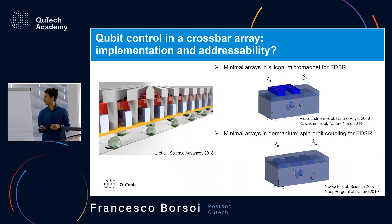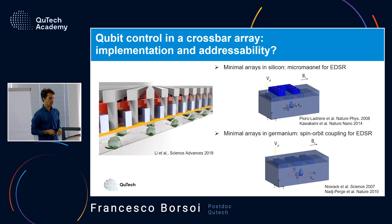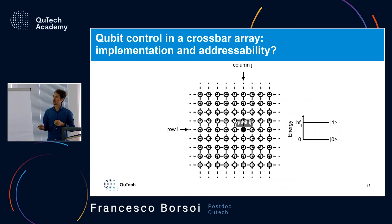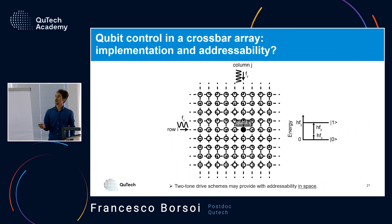We have been thinking about a two-tone driving scheme exploiting the crossbar row-and-column structure. To operate a qubit at row i and column j, we send one tone on column j and one tone on row i, with the condition that the sum — or difference — of the two frequencies matches the qubit resonance. This could enable spatially selective qubit rotation using the crossbar addressing scheme itself.